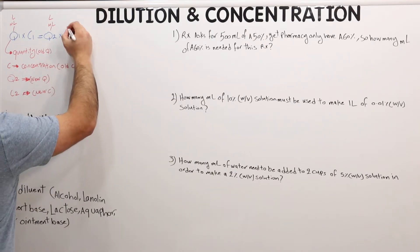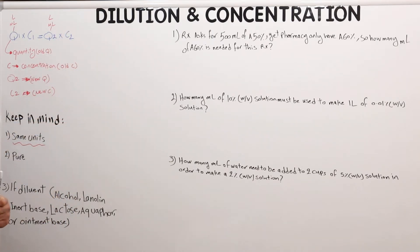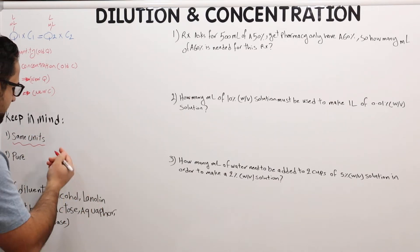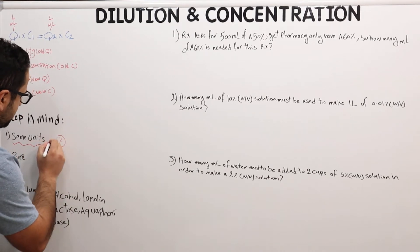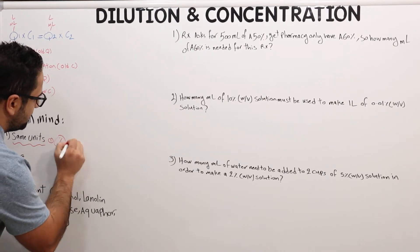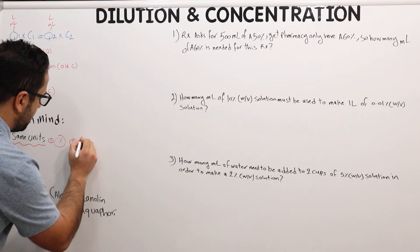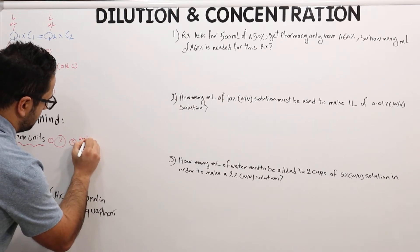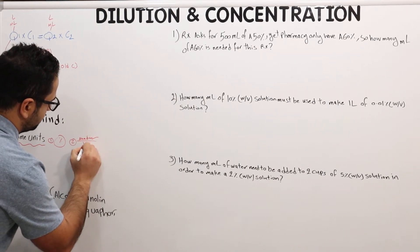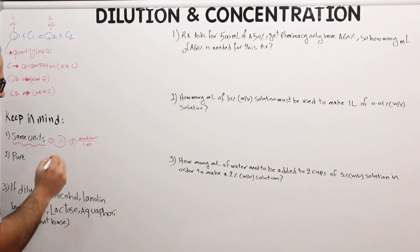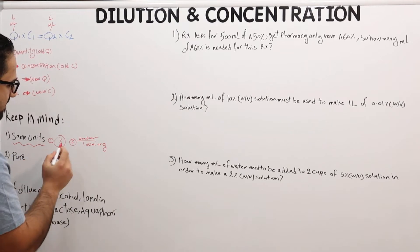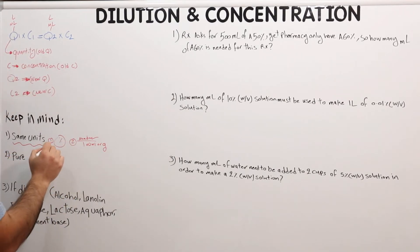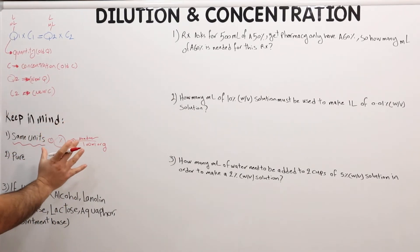The same applies to concentration. As covered in a previous lecture, concentration comes in two forms: one is a plain number, and number two would be a number over 100 — and it can be milliliters or grams. Those are the two ways concentration can appear.